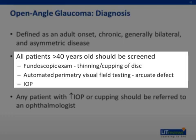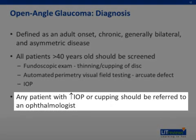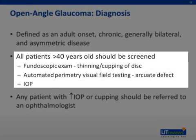There must also be an open and normal appearing anterior chamber angle and absence of secondary causes. Diagnostic testing includes fundoscopic examination, visual field testing with automated perimetry, and measurement of intraocular pressure by applanation tonometry. Normal intraocular pressure measures 8 to 21 mmHg. Elevated intraocular pressure is not diagnostic of open angle glaucoma: about one-third to one-half of patients with visual field deficits have normal IOP, and greater than 90% of patients with elevated IOP have no optic nerve damage. However, patients with elevated IOP should be referred to an ophthalmologist given the higher risk of developing glaucoma. All patients over the age of 40 should undergo screening with a comprehensive eye exam, as should any patients with abnormal cupping or elevated intraocular pressure.